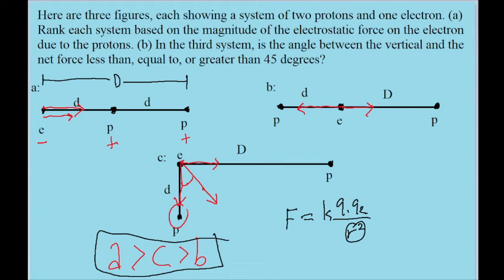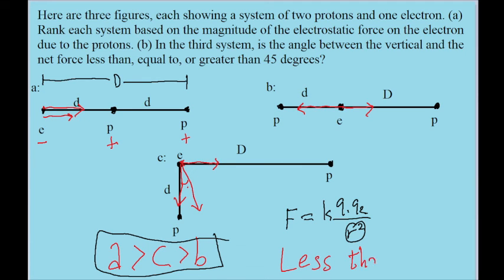Looking at situation C with that knowledge, we can see that the proton below is a lot closer to the electron than the proton to the right, since distance small d is shorter than distance big D. For that reason, the vertical component of the net force is stronger than the horizontal component. Because the force is stronger in the vertical direction, the net force vector points more towards the bottom proton, which means this angle is clearly going to be less than 45 degrees.